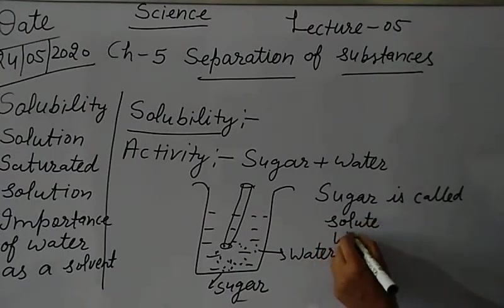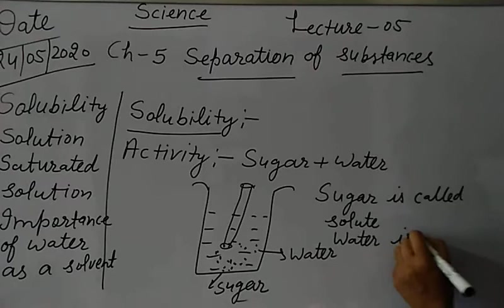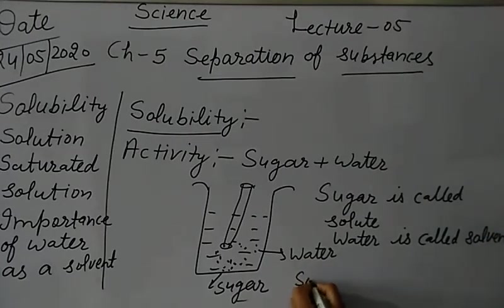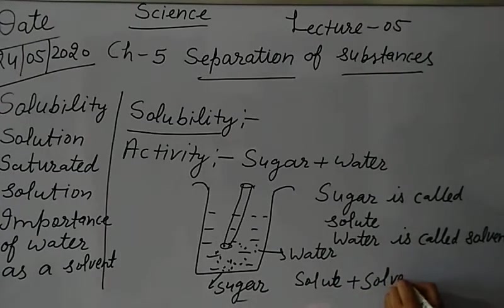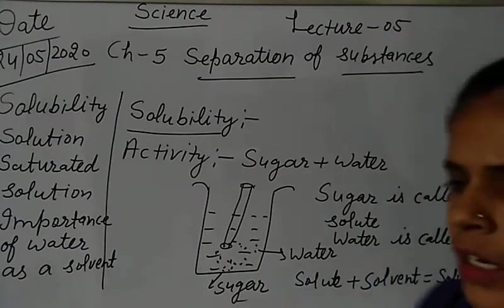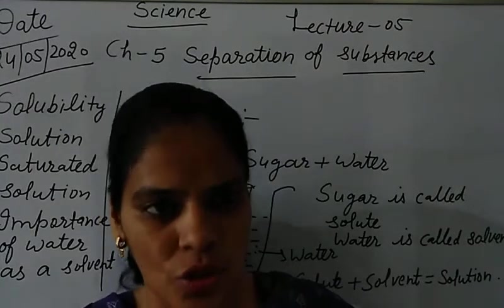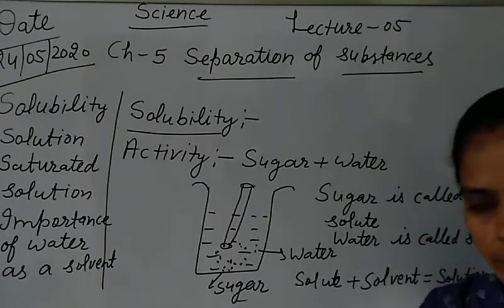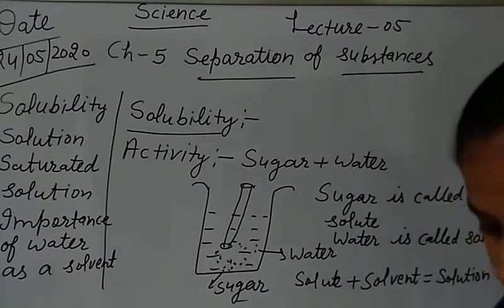This means sugar here is called the solute, and water is called the solvent. Solute plus solvent mixed together forms a solution. A mixture of solute and solvent is known as a solution. You can make a solution with salt plus water or sugar plus water.